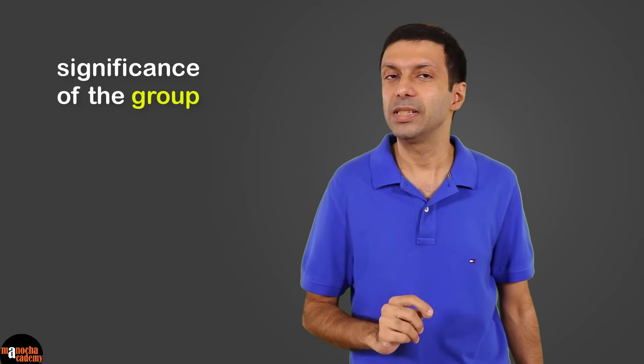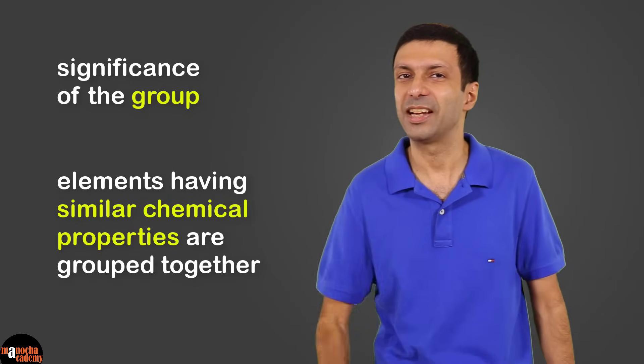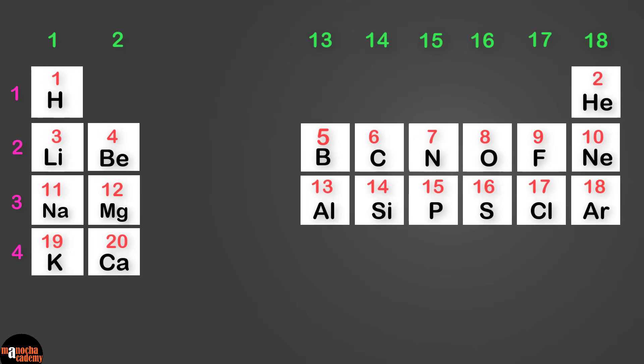Now imagine you walk into the grocery store and everything is scattered - you'll go crazy while shopping. Similarly, in the periodic table, elements having similar chemical properties are grouped together. Now let's take a closer look.